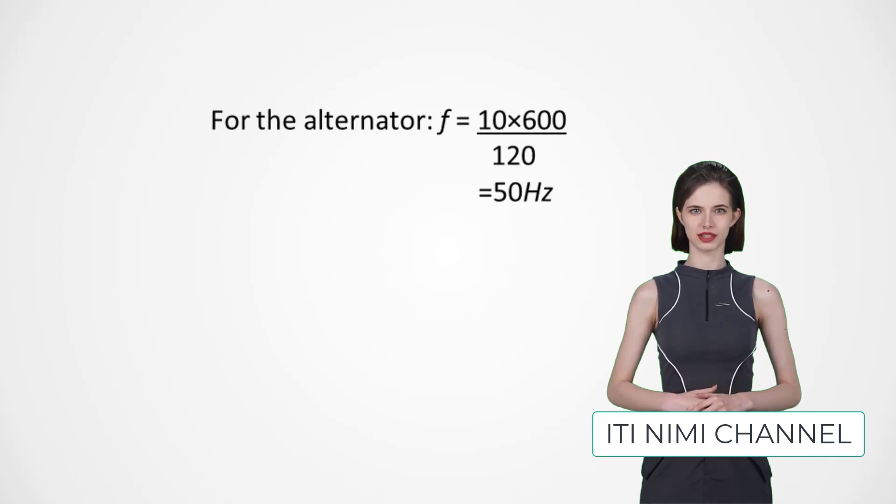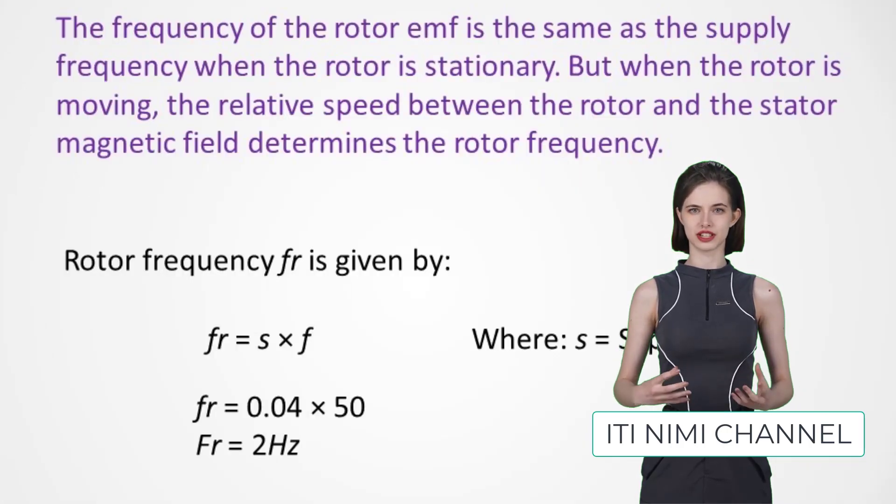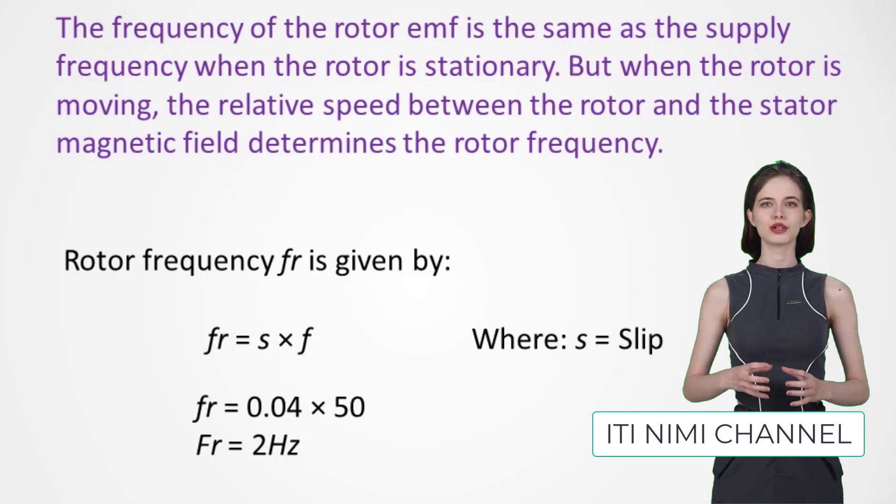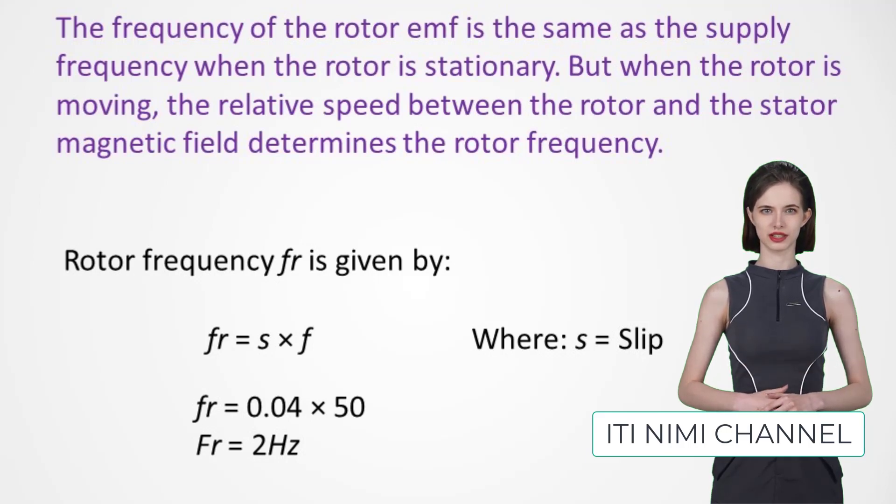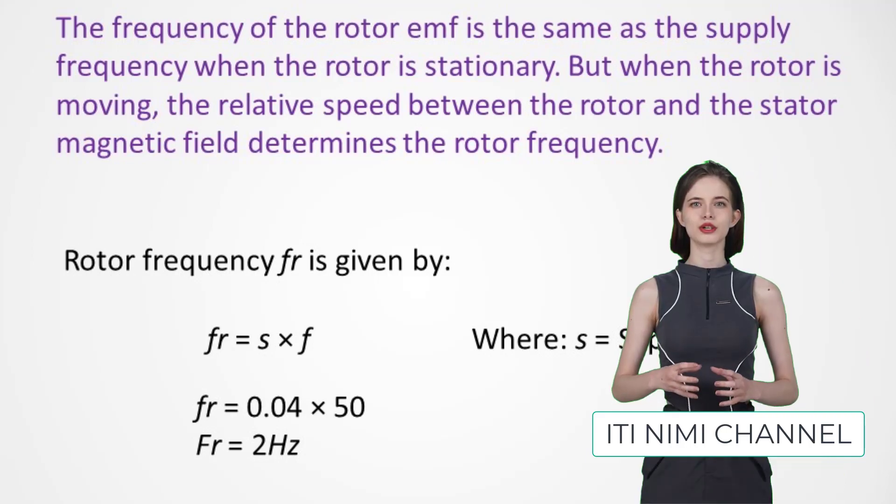Now, the rotor frequency is influenced by the slip. It's calculated as: rotor frequency equals slip multiplied by frequency. Given a slip of 4%, which is 0.04 in decimal form, our rotor frequency is 2 Hz.